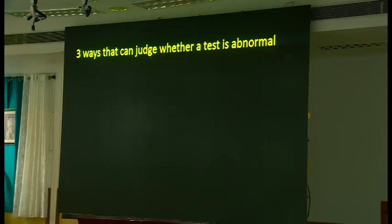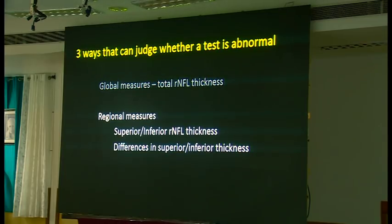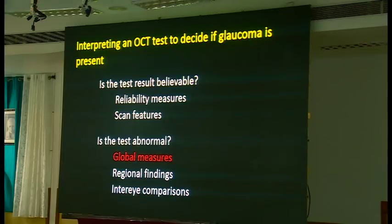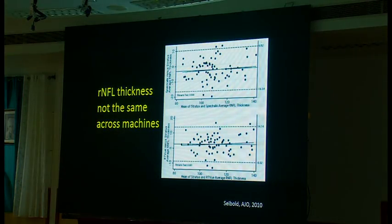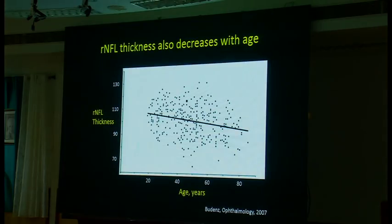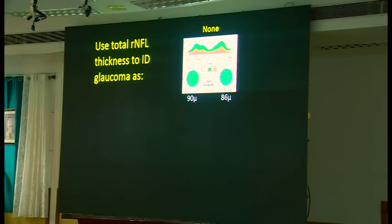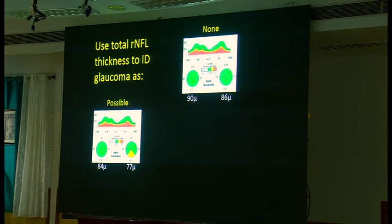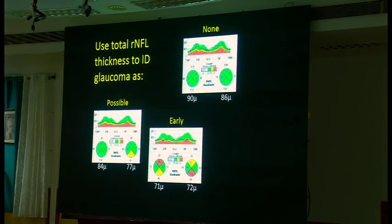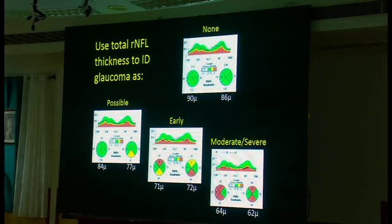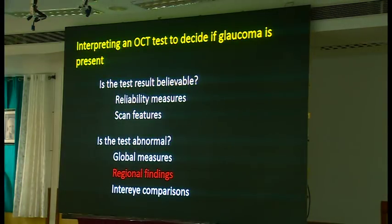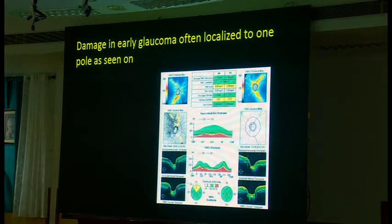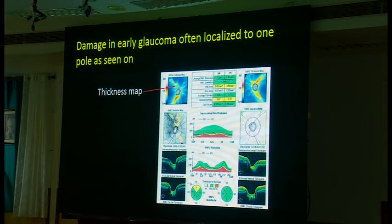When assessing whether the test is normal, I use global measures first, regional measures second, and asymmetry third. Global measures are the most useful. Keep in mind that thicknesses are not absolute — they're not the same across machines — and they decrease with age. On the Zeiss machine, total thickness in the 90s or mid-80s almost certainly indicates no glaucoma; upper 70s suggests possible glaucoma; low 70s suggests early glaucoma; and below that indicates moderate or severe glaucoma.